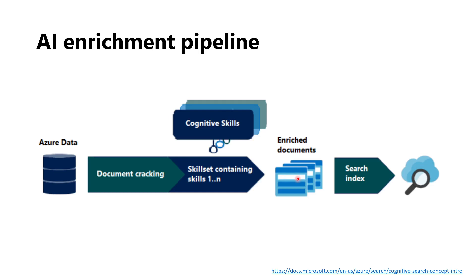Optionally, we can integrate a suggestor. A suggestor allows us, as the name says, to suggest based on the search we are creating and the data we have within the index. So the three sections are: data source, cognitive skills and enrichment documents, and the schema for the index. To get the enriched documents, we need to create the indexer. The indexer integrates the data source, the cognitive skills, and the index together to pull data from the source, add the enrichment, and push it into the index — giving us our enriched documents.